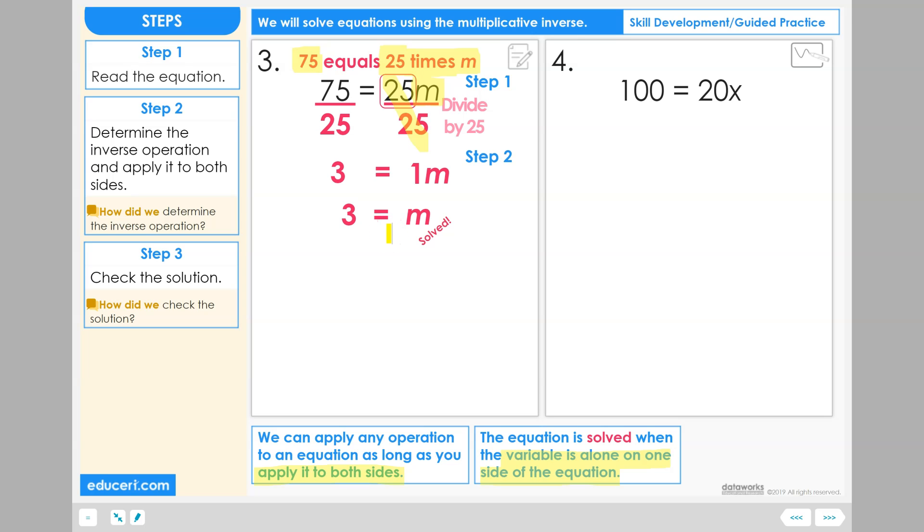How did we determine and use the inverse operation to solve our equation? We use the coefficient of the variable and apply the multiplicative inverse to the coefficient on the variable, even if it's on the right side.